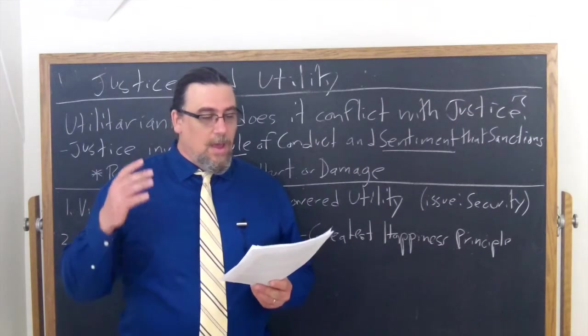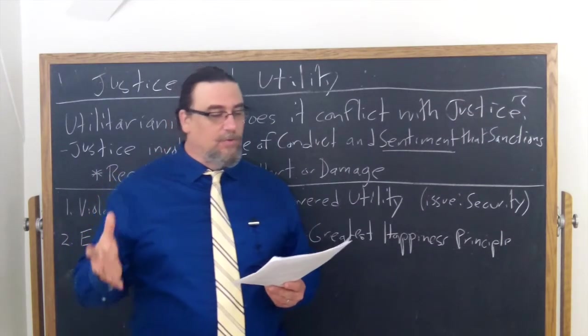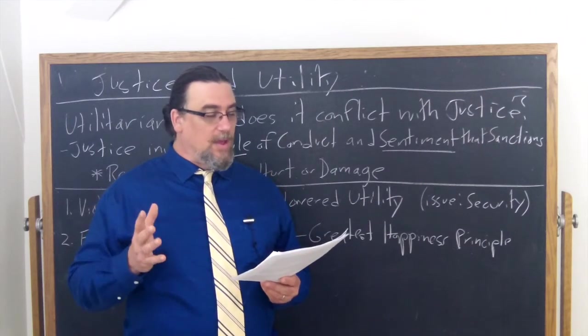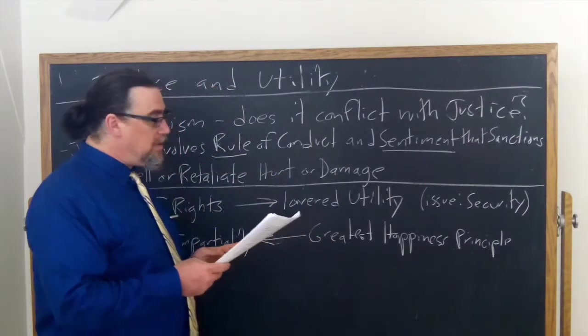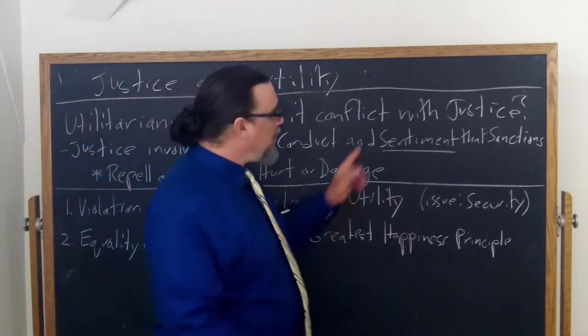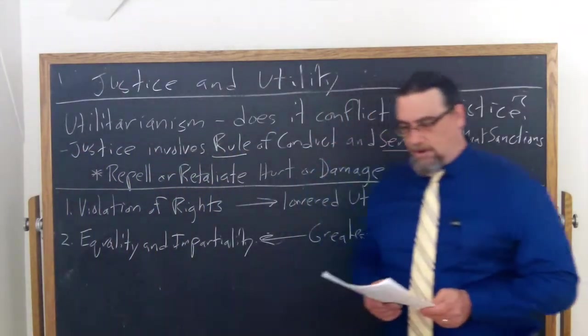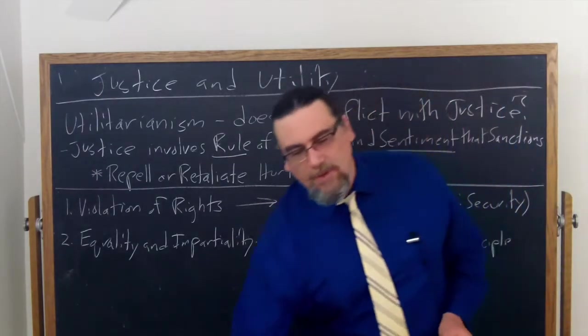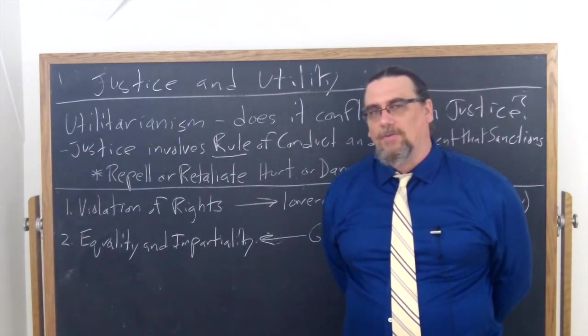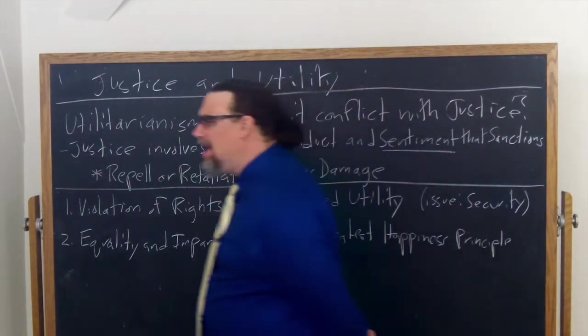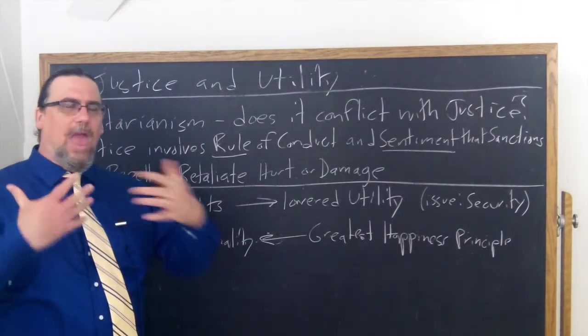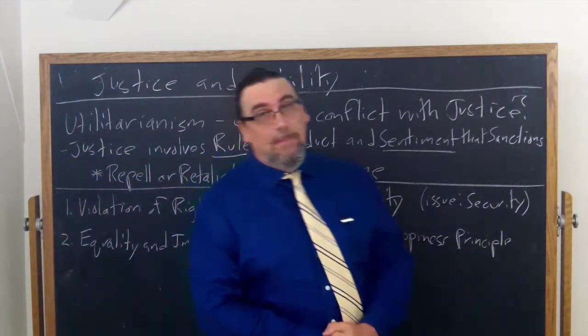So he tells us that there is involved also the conception of some definite person who suffers, whose rights—and we're going to talk about rights in another discussion—are violated. And he says the sentiment of justice appears to me to be the animal desire to repel or retaliate some hurt or damage. That's what's involved in this sentiment. And then he says, how does this play out? If we think about this in utilitarian ways, this makes a lot of sense.